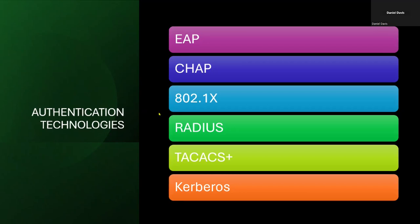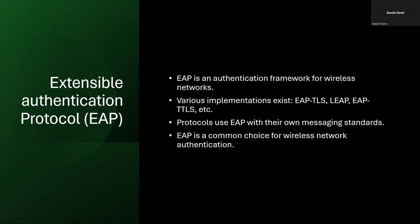We're going to cover a handful of authentication technologies: EAP, CHAP, 802.1X, RADIUS, TACACS Plus, and Kerberos. First up, we have EAP — Extensible Authentication Protocol. EAP is an authentication protocol primarily used for wireless networks. There are various implementations: EAP-TLS, LEAP, and EAP-TTLS. Other protocols use the EAP protocol with their own messaging standards. EAP is a very common choice for wireless network authentication.